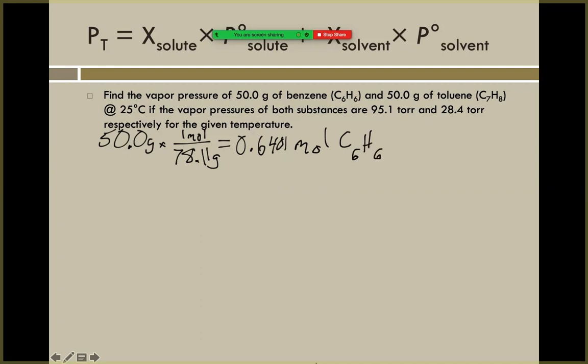Let's go ahead and find our other mole value then. We need to know the moles of toluene. We've got 50.0 grams of our toluene with a molar mass of 92.14 grams per every one mole. When we do our math here, we find that we have 0.54265 moles of our toluene, which was C7H8. So we've got our two mole values here.